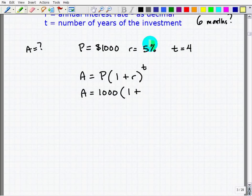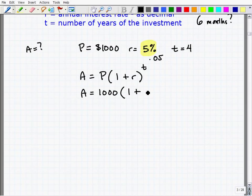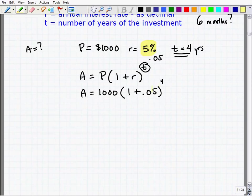So it's going to be A equals 1,000 times 1 plus the interest rate. The interest rate is 5%, but 5% as a decimal is 0.05, so that's what we have to plug in here, 0.05. And t is the number of years we're going to invest. In this case, it's going to be 4 years. So we're going to put a 4 right up here. This is now what we have to figure out.